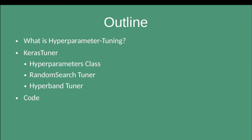I will start by explaining the general concept of tuning the hyperparameters of a model, after which we will go directly into the Keras tuner framework. More specifically, I will go into detail on how the hyperparameters class is used and I will introduce two different tuning algorithms: random search and hyperband tuning. After these explanations, we will go to the code and put everything together to improve a model by tuning its parameters.